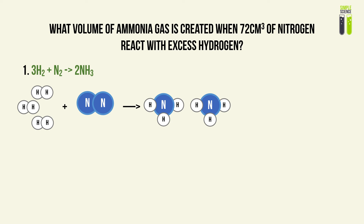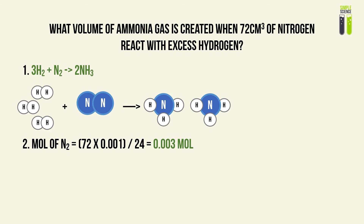Just like any basic equation question, in order to find important values, we must first find the number of moles of all elements and compounds in the reaction. We have a known limiting volume of nitrogen, which is 72 cm³. Using volume divided by the molar gas constant, we convert 72 cm³ to dm³ by dividing by 1000, then divide by 24, giving 0.003 moles of nitrogen.